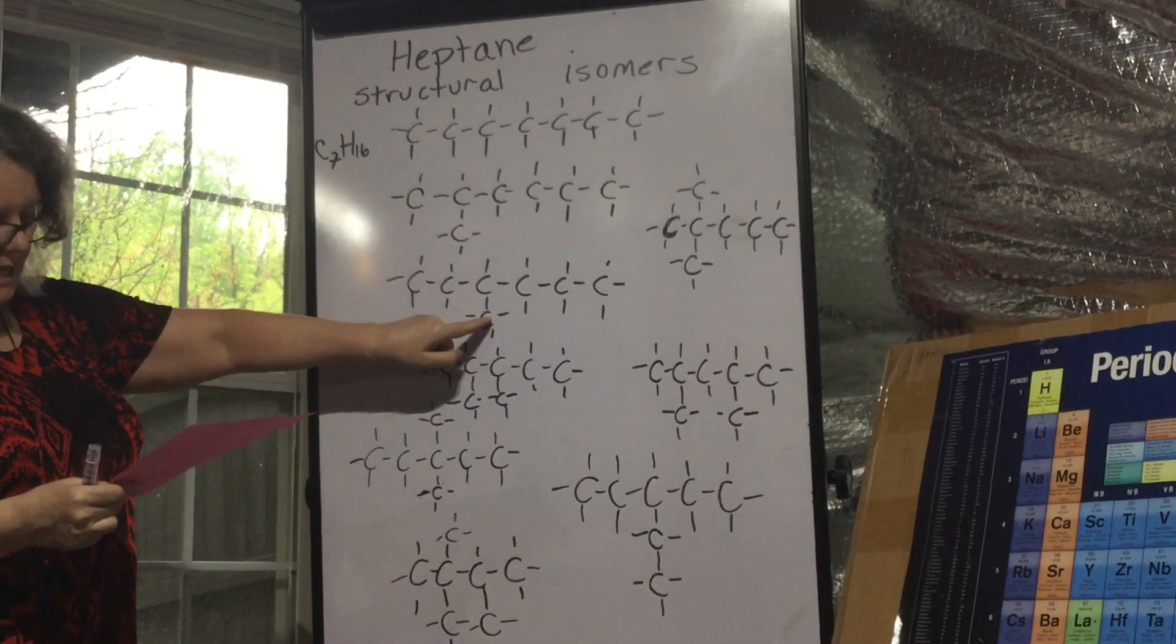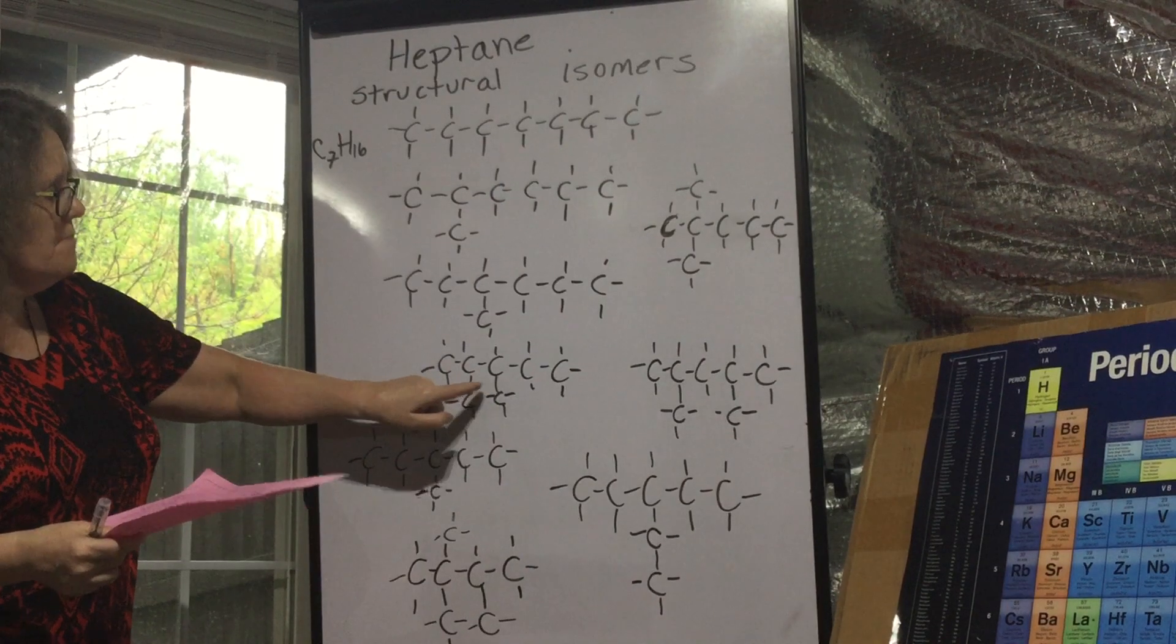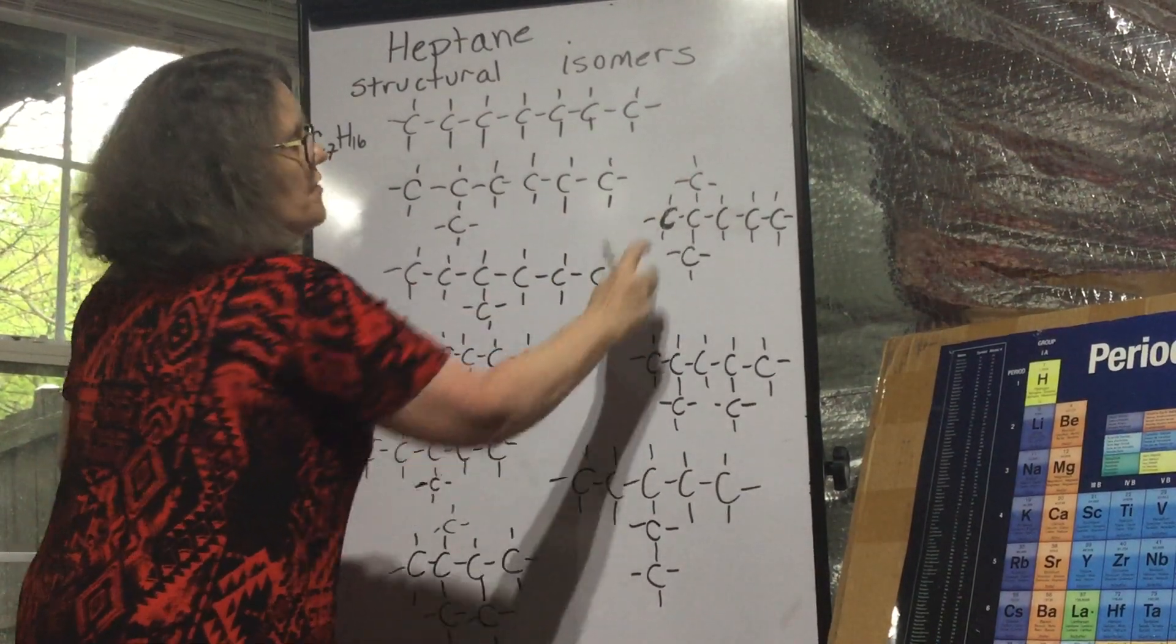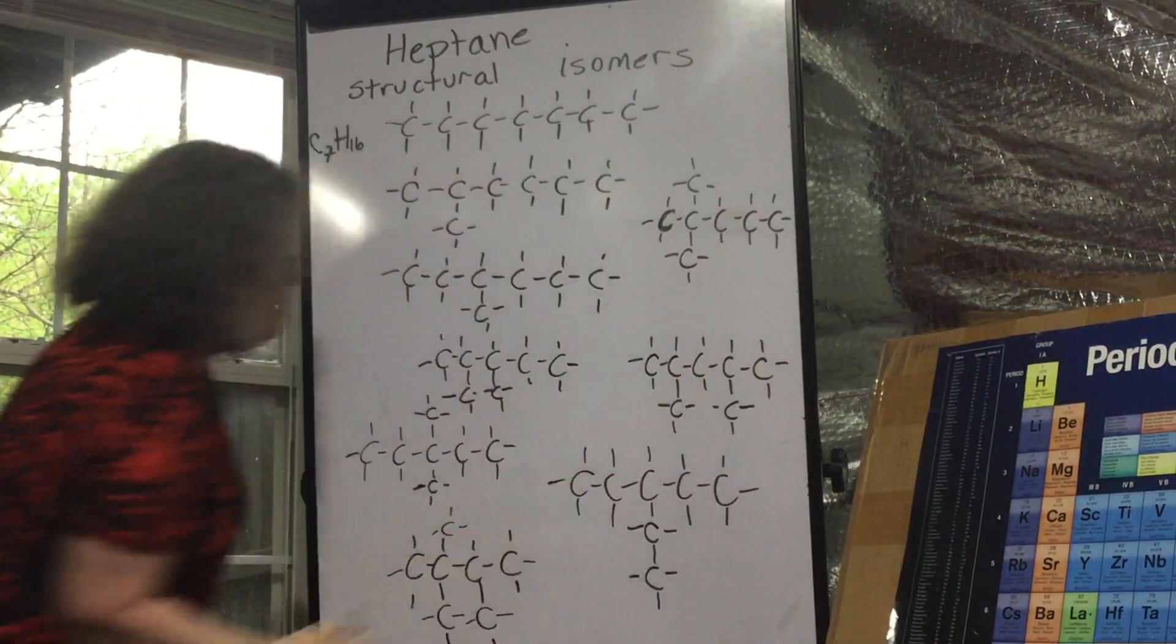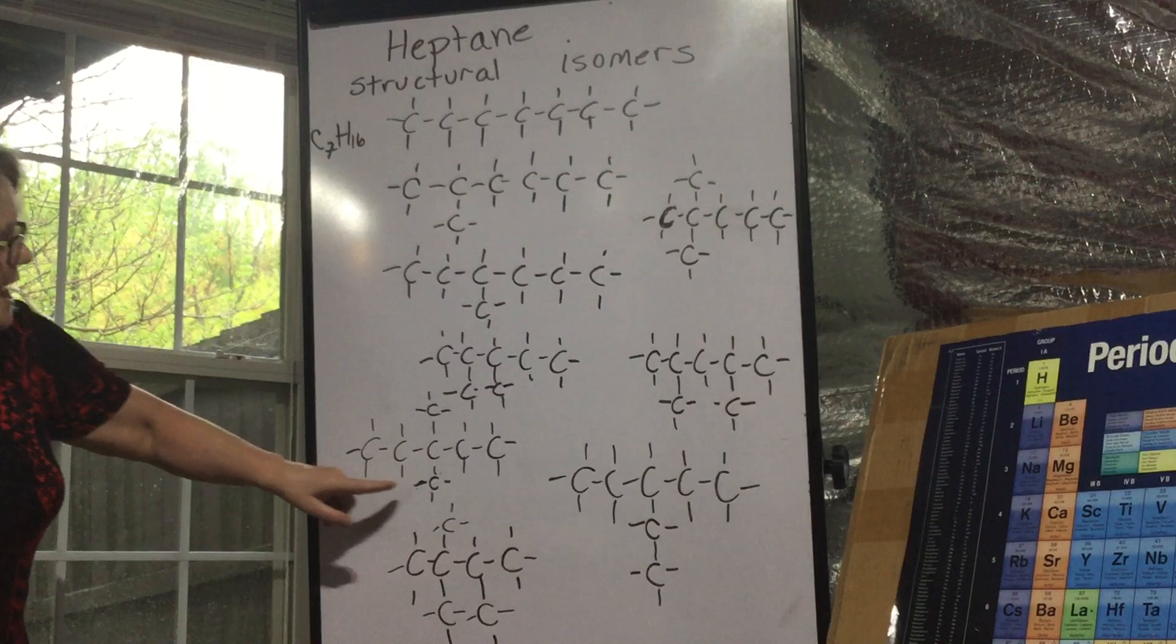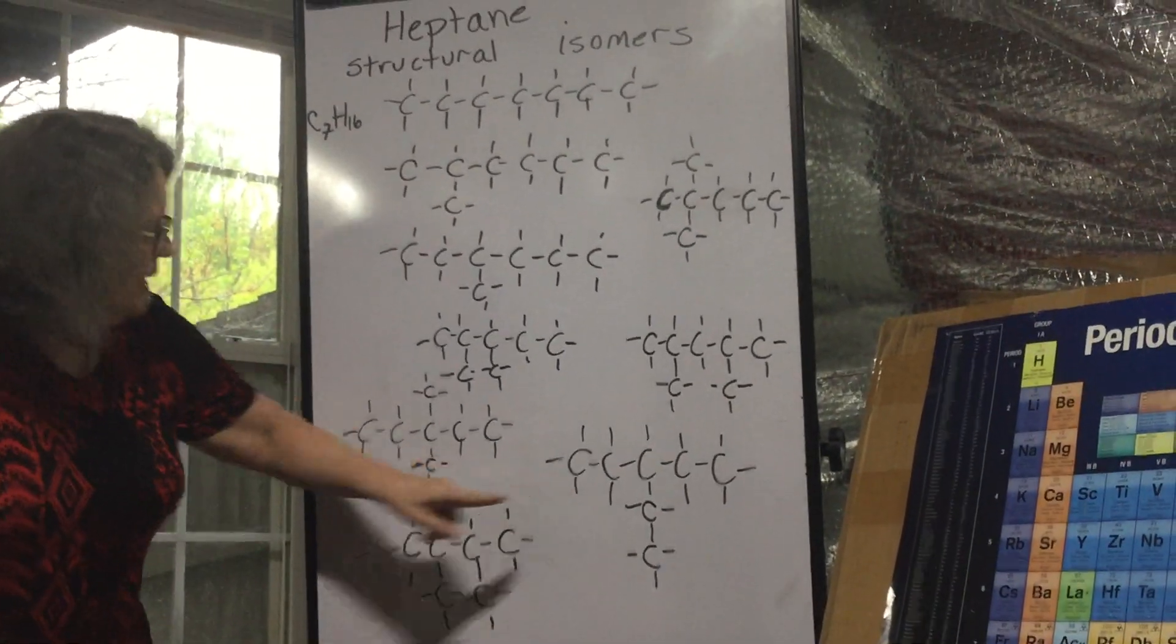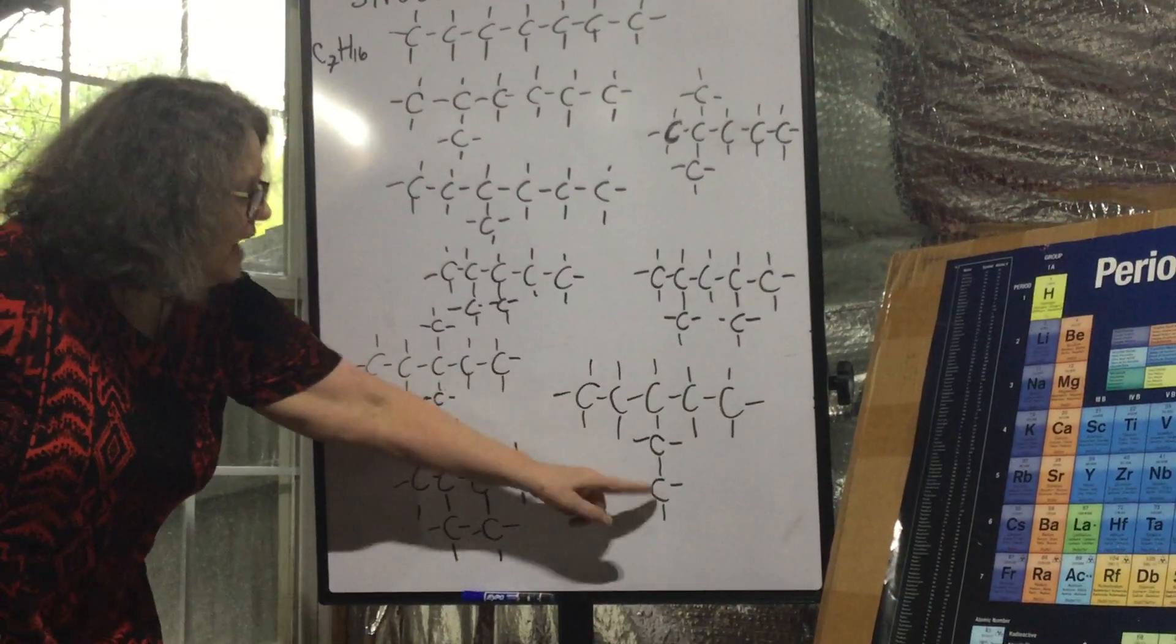So does 3-methyl hexane, 2,3-dimethyl pentane, 2,2-dimethyl pentane, and 2,4-dimethyl pentane. And here we have 3,3-dimethyl pentane.